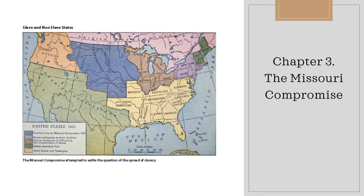Here is a map showing the Missouri Compromise and how it attempted to settle the question of the spread of slavery. You can see which states were slave states, which were non-slave states, and it also shows some of those territories.